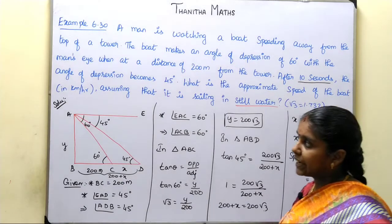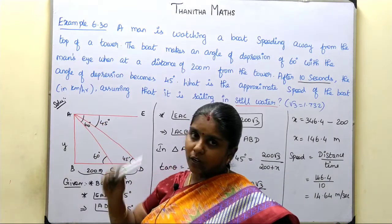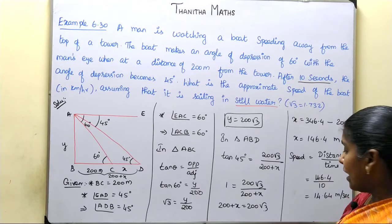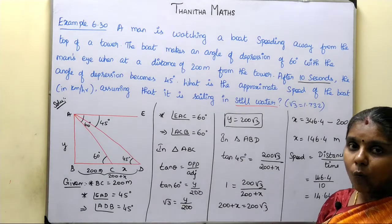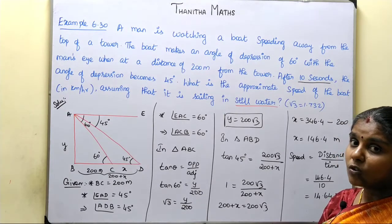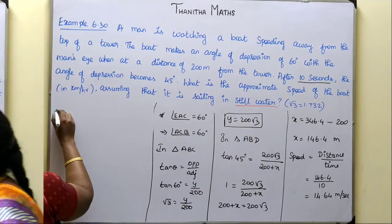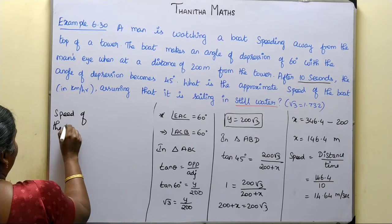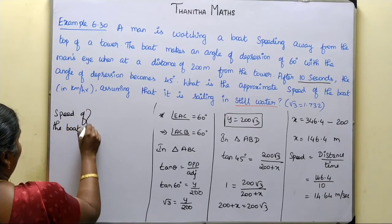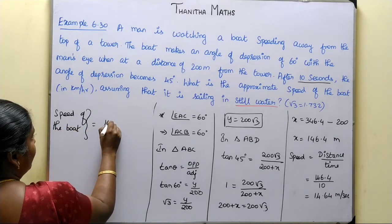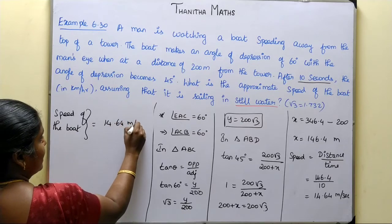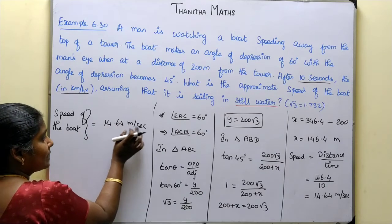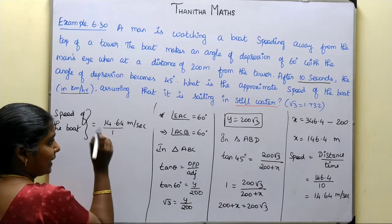But the question asks for the speed in kilometers per hour. To convert meters per second to kilometers per hour, we divide meters by 1000 to get kilometers, and divide seconds by 3600 to get hours. So we multiply by 3600 divided by 1000, which equals 3.6. Speed equals 14.64 meters per second.